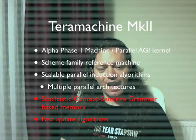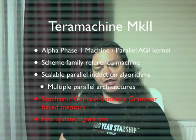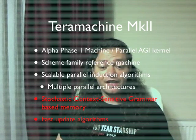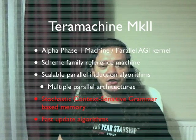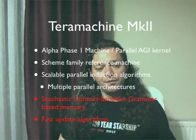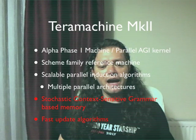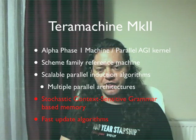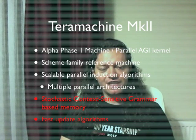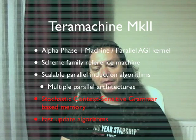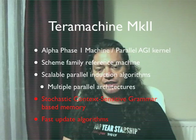TerraMachine Mark II is an alpha phase 1 machine of Solomanov's alpha architecture, which is an extremely powerful AI system. It can also be considered a parallel AGI kernel, which can be used to construct any kind of AI system. TerraMachine uses a scheme family reference machine and has scalable parallel induction algorithms on multiple parallel architectures. Its long-term memory representation is stochastic context-sensitive grammar together with test-update algorithms that make the system practical and effective.